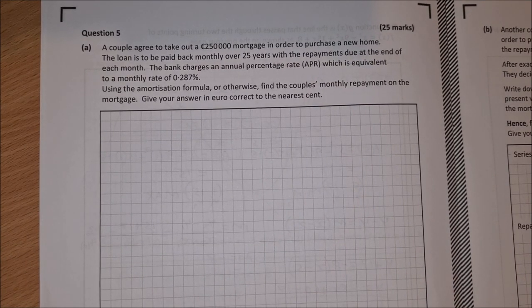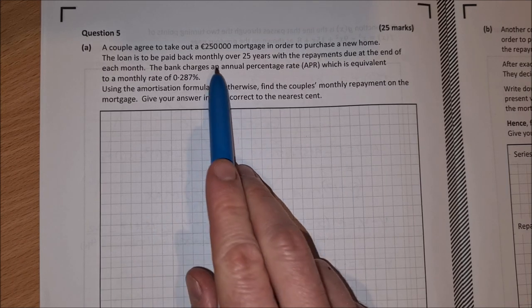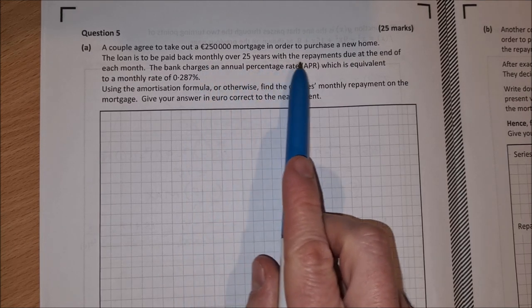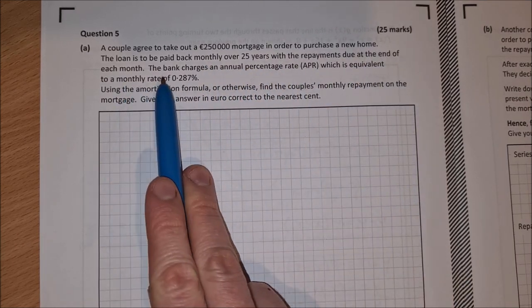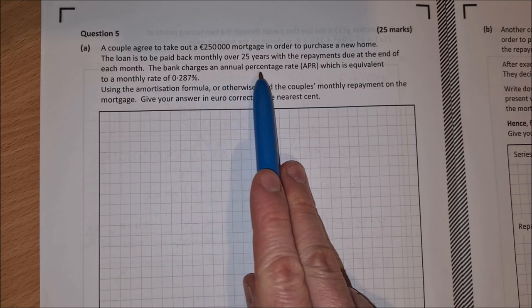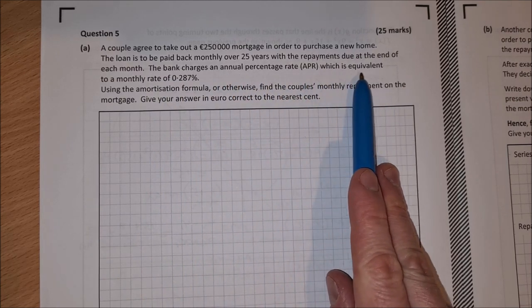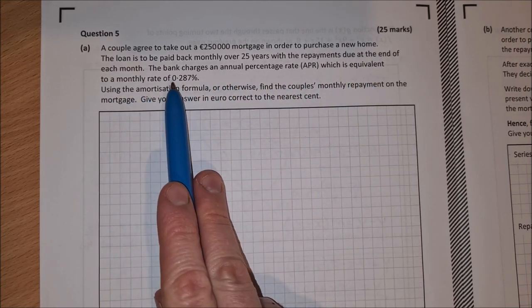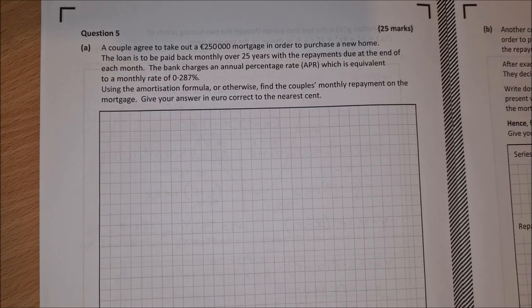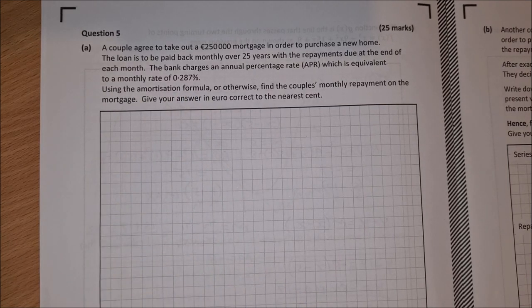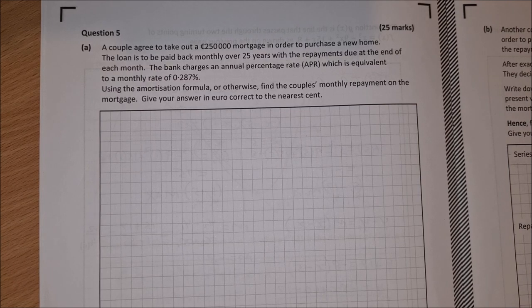Question 5 is our financial maths question and it reads: a couple agreed to take out a mortgage of £250,000 in order to purchase a new home. The loan is to be paid back monthly over 25 years with the repayments due at the end of each month. The bank charges an annual percentage rate APR which is equivalent to a monthly rate of 0.287%. Using the amortization formula or otherwise, find the couple's monthly repayment on the mortgage. Give your answer in euro, correct to the nearest cent.